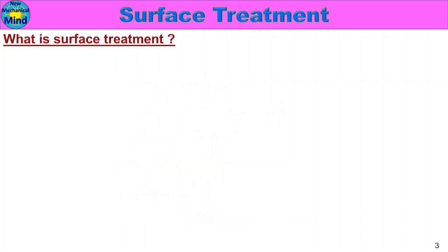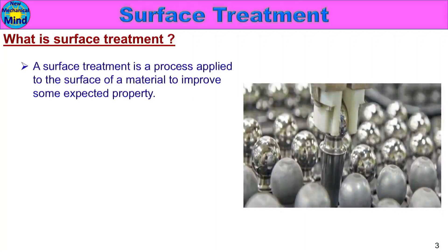First, what is Surface Treatment? Surface Treatment — also called Surface Finish — is a process applied to the surface of a material to improve some expected property. When we produce products, sometimes surface quality or surface properties are directly connected to the surface area. That's why we want to add Surface Treatment.